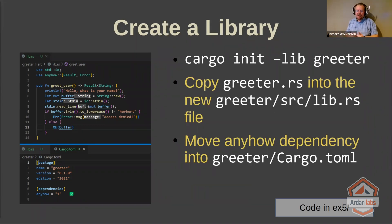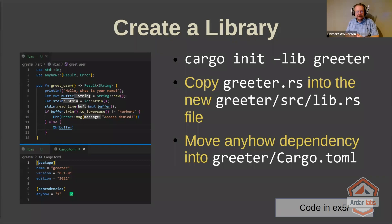Libraries don't have to have a main function because you're generally not running the library. So if you copy the greeter.rs file that you made earlier into greeter/source/lib.rs, and copy the dependency that you had in your cargo.toml file to the new greeter cargo.toml, you now have a library. The code for this is in example five.